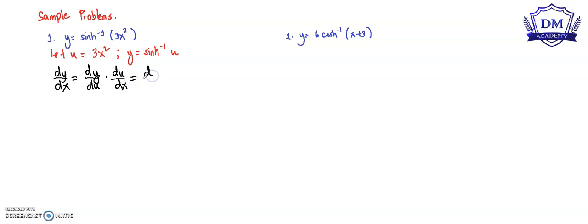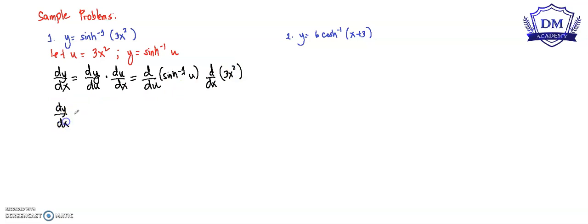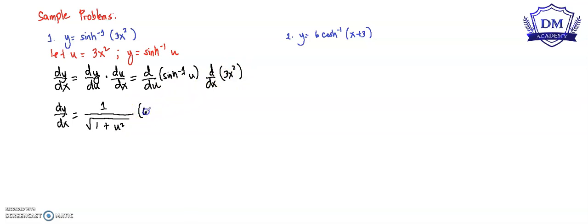This is equal to d/du of the inverse hyperbolic sine of u, times d/dx of 3x squared. The derivative of the inverse hyperbolic sine of u is 1 all over the square root of 1 plus u squared, multiplied by the derivative of 3x squared, which is 6x.